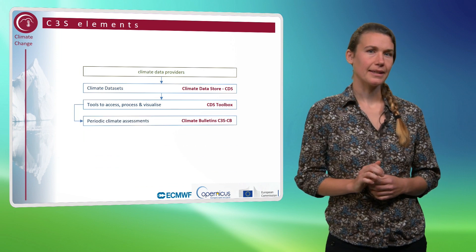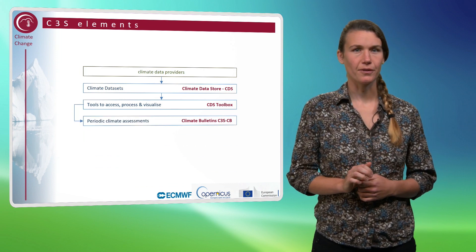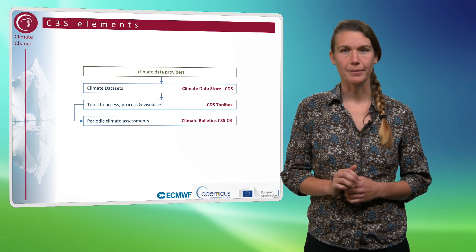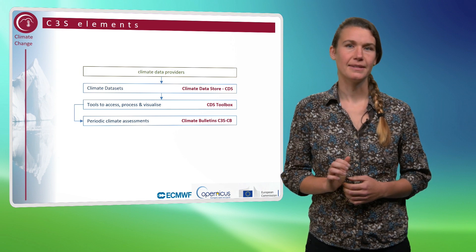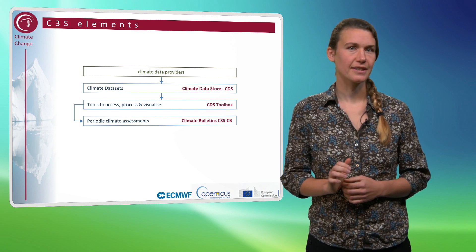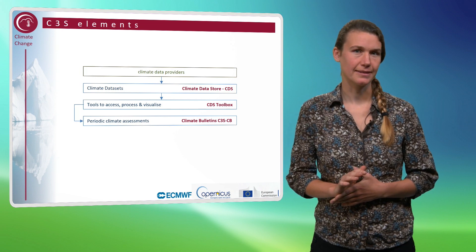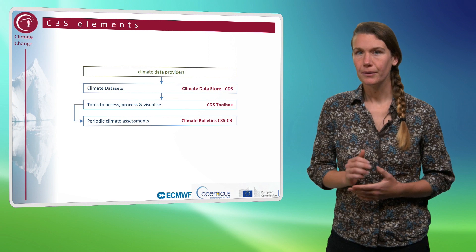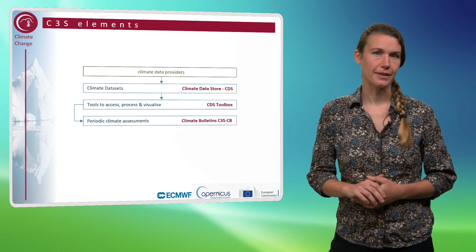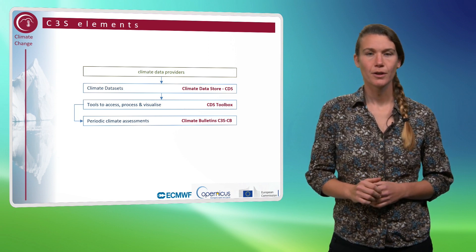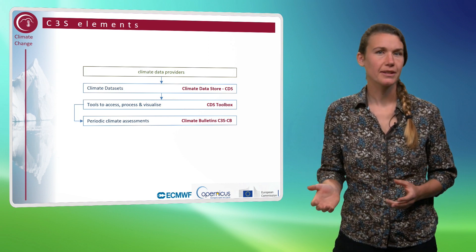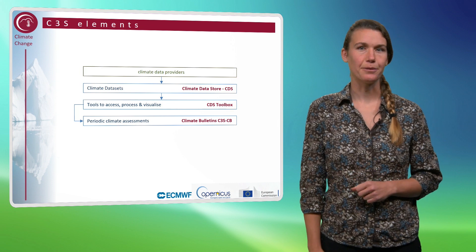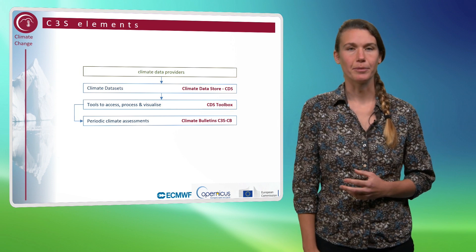The Copernicus Climate Change Service also provides periodic assessments of climate. C3S provides climate bulletins on a monthly, annual, or if there's need for it, on an event basis. For example, there was a climate bulletin made last summer on the heatwave in Northern Europe.